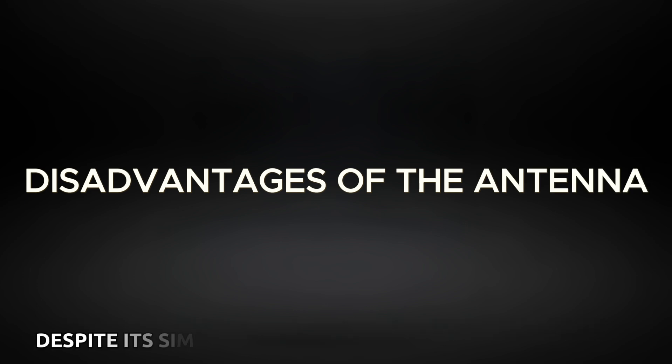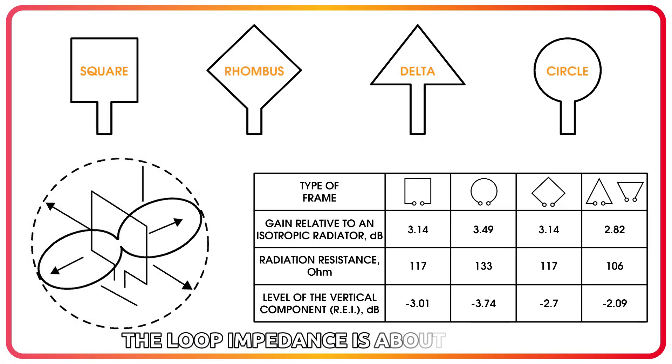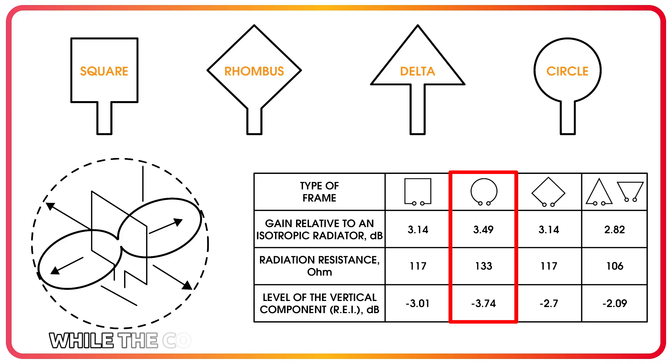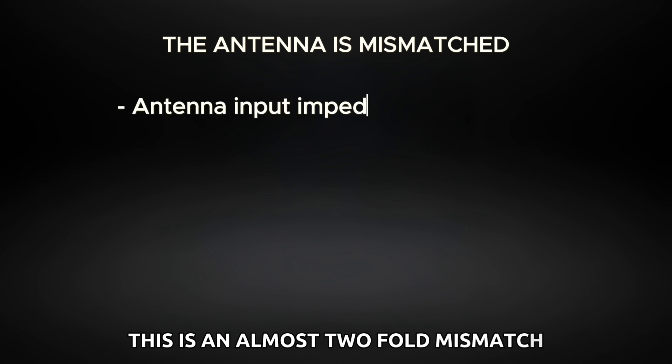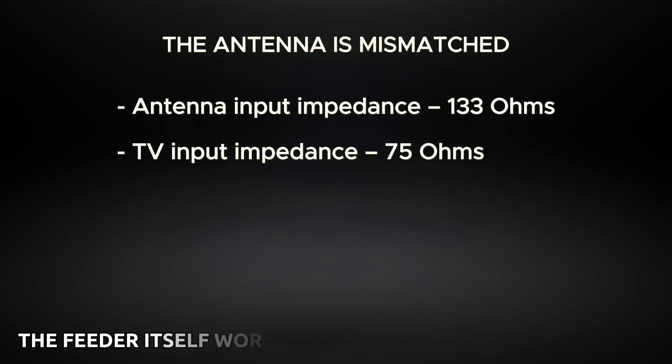Despite its simplicity, it is unlikely to work perfectly. The loop impedance is about 133 ohms, while the coaxial cable and TV input have 75 ohms. This is an almost two-fold mismatch. It's good if the feeder itself works as a transformer on long lines, but you shouldn't count on it.